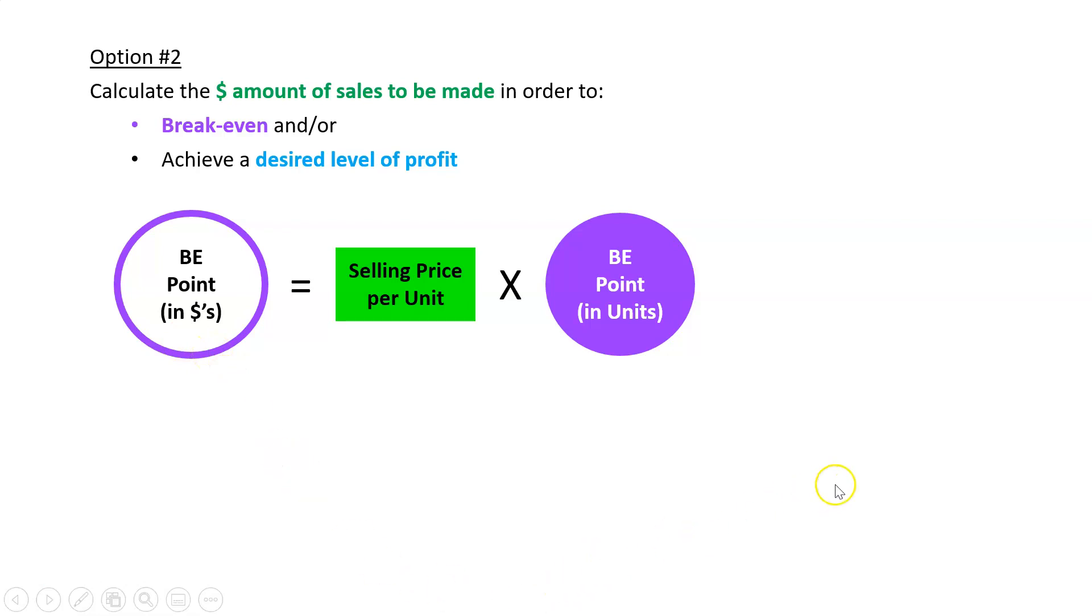We're going to take the selling price per unit and multiply that by the number of units we need to sell to break even.